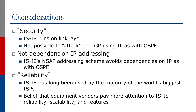That's hardly an improvement in security, but at least having the IGP running on the data link layer gives a perception of an improvement over OSPF. IS-IS is also not dependent on IP addressing — its NSAP addressing scheme avoids dependencies on IP, as with OSPF. Reliability is often quoted as a reason as well. IS-IS has long been used by the majority of the world's biggest internet service providers, and so there is a belief that equipment vendors pay more attention to IS-IS reliability, scalability, and features than they would with OSPF.